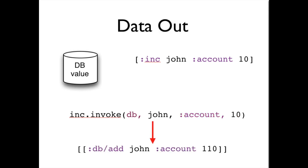Finally, the job of the transaction function is to produce zero or more elements of transaction data. Here, there is a single piece of transaction data, a list asserting that john's account balance is now 110.